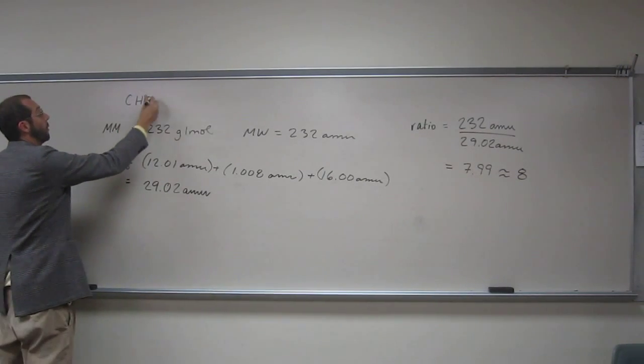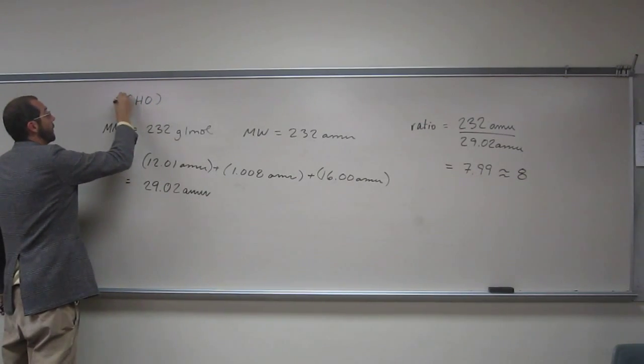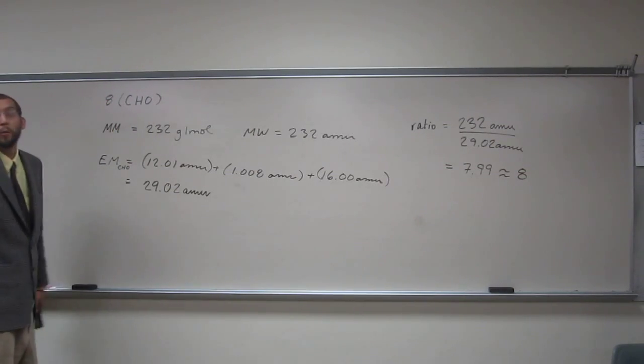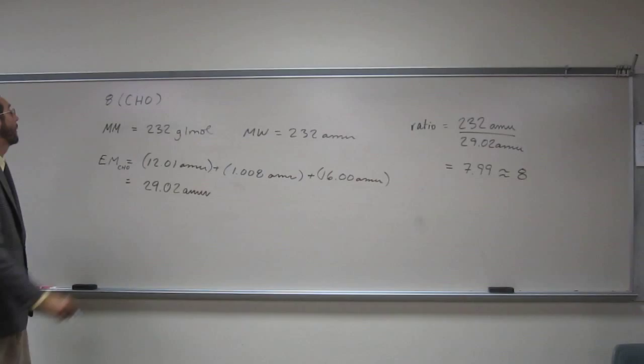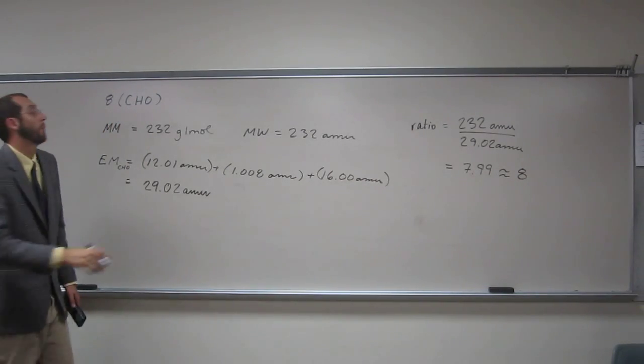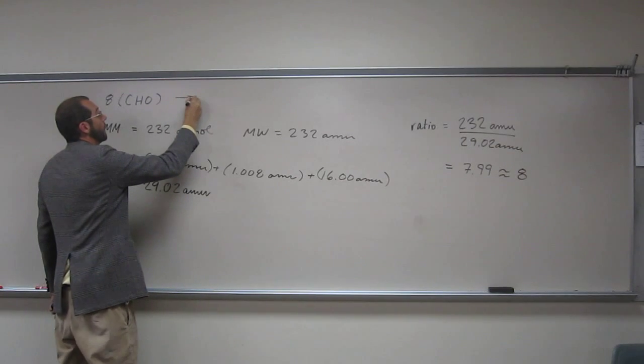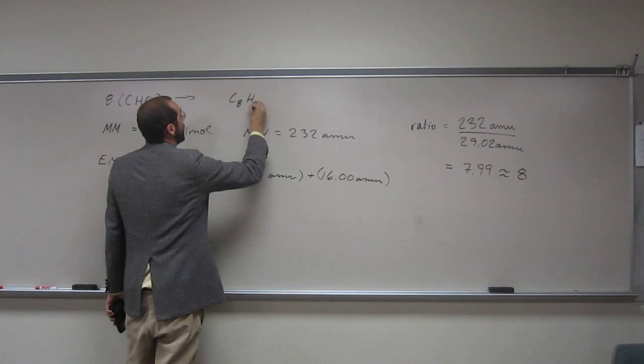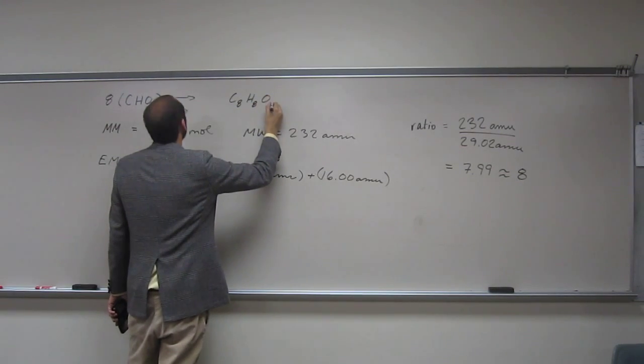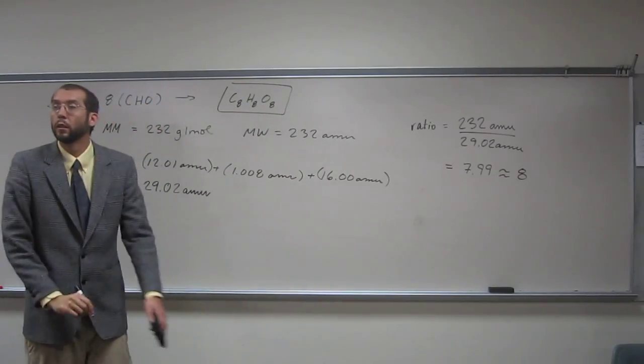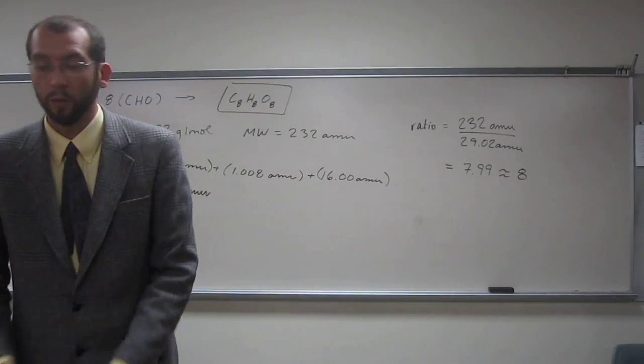So in order to get the molecular formula, what I'll do is take the empirical formula and multiply it by 8. Okay, remembering when I'm doing this, I'm multiplying as subscripts. So that's going to go to C8H8O8. Okay, so that's the molecular formula.